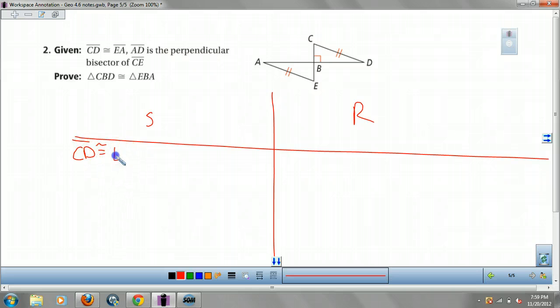Let's start by writing again. EA. AD is perpendicular bisector of CE. Okay, what do we know? Oh, that's given.